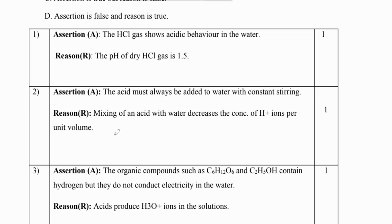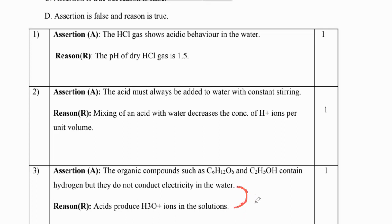Question number 3: organic compounds such as C₆H₁₂O₆ and C₂H₅OH contain hydrogen but they do not conduct electricity in water - that is true. The reason says acids produce H₃O⁺ ions in solution, which is also correct, but there is no relation between the two. So B is the answer.